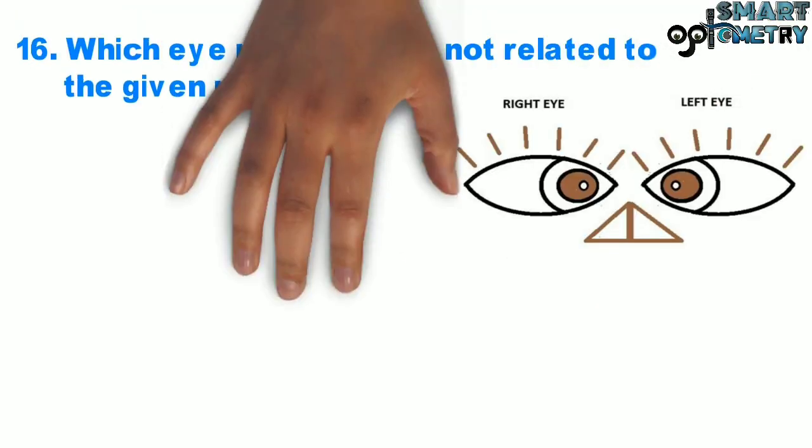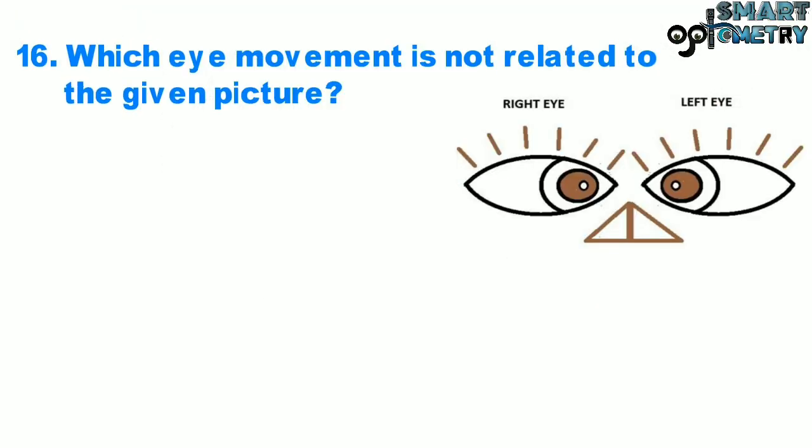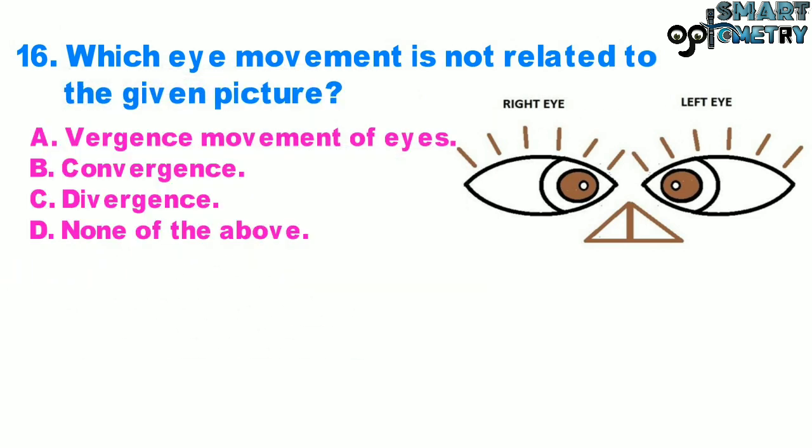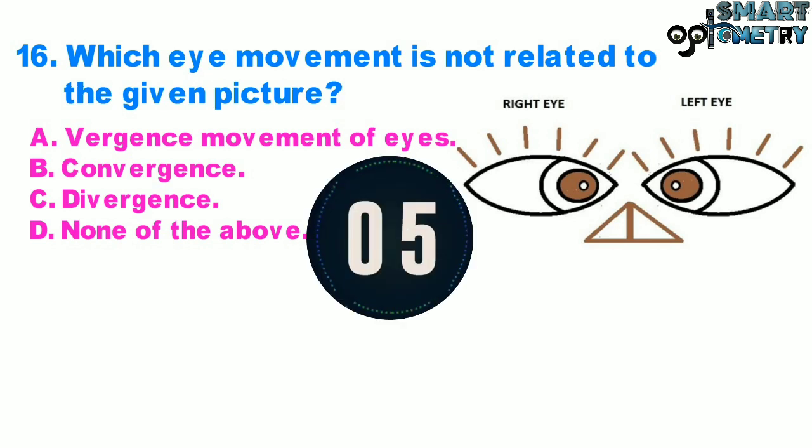Question 16. Which eye movement is not related to the given picture? A. Vergence movement of eyes, B. Convergence, C. Divergence, D. None of the above.